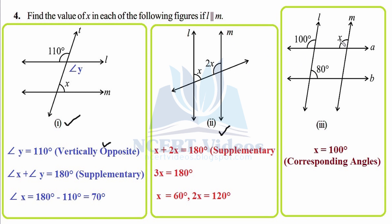In the third figure, l is parallel to m. There are two transversals. Never consider lines a and b as parallel — it is not given. In geometry, only consider what is stated. Using corresponding angles along the transversal, x equals 100°. The extra lines are included to divert your attention, but the answer is straightforward: x equals 100° by corresponding angles.